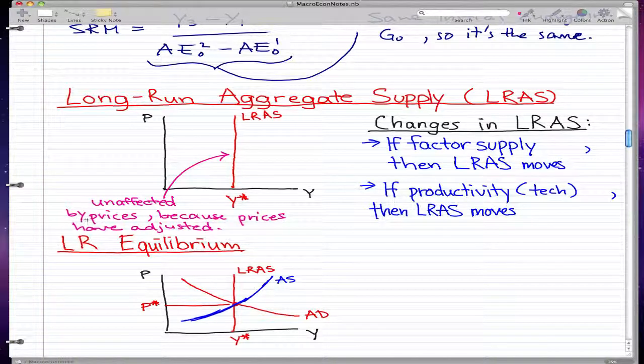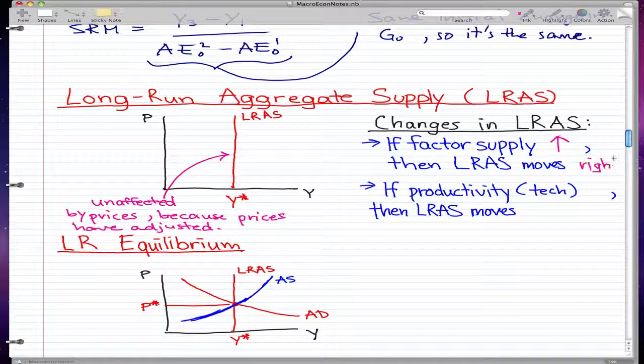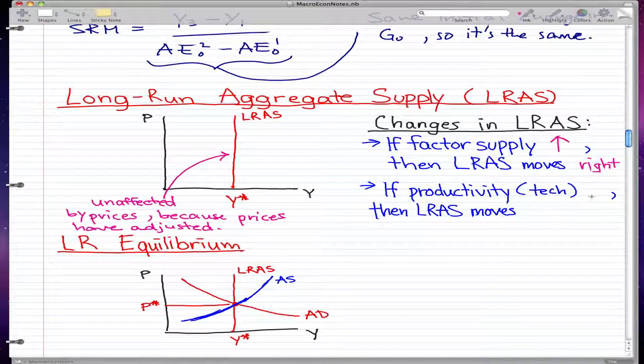A little bit about the changes in long-run aggregate supply: if the factor supply rises, then the LRAS—the long-run aggregate supply—moves right. And if productivity or technology increases or rises, then the LRAS also moves right.